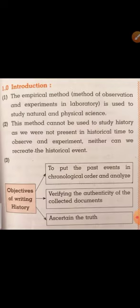In the introduction we have studied that the empirical method, that is the method of observation and experiments in laboratory, is used to study natural and physical sciences. We conduct experiments in the laboratory pertaining to subjects like physics, chemistry, and biology. Now this method cannot be used to study history, as we were not present in historical time to observe and experiment, neither can we recreate the historical event.